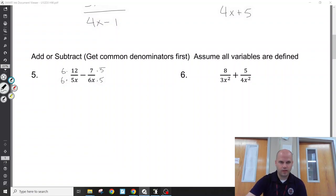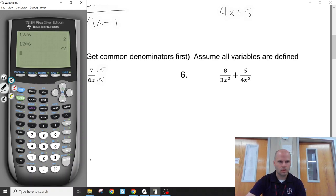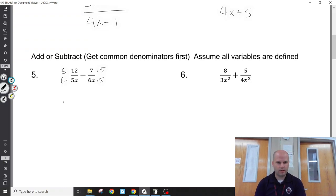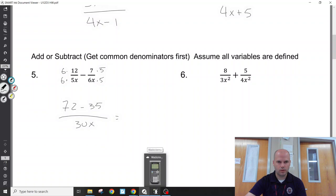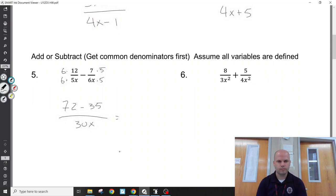I'll use my calculator here. 12 times 6 is what? 72. 7 times 5 is 35. So I have 72 minus 35. And now I have a common denominator, 30x. 72 minus 35 is, what, 37? 37. So 37, 30's, x's.